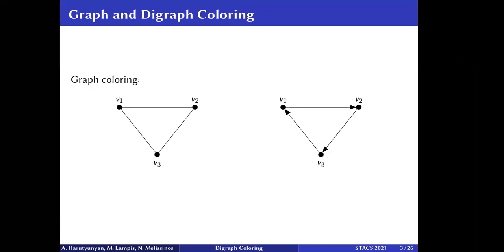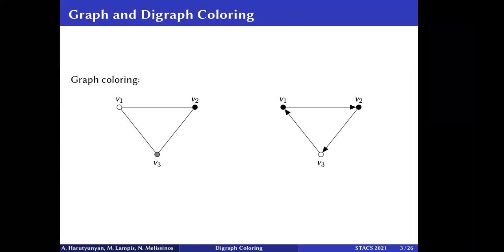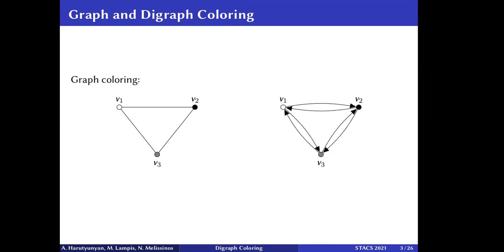However, if we generalize this idea to directed graphs, we completely ignore the direction of the arcs. For that reason, we discuss another coloring property: we want the colors to induce a directed acyclic graph. For this directed cycle, we can color two vertices black and the third white, since each color class induces a DAG.